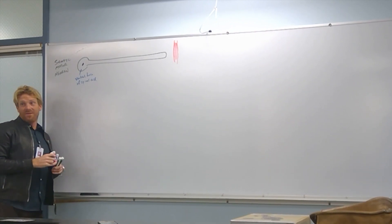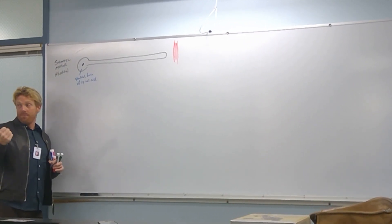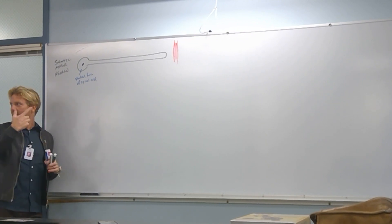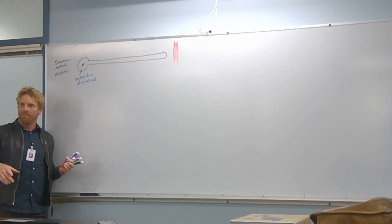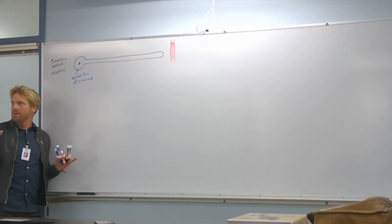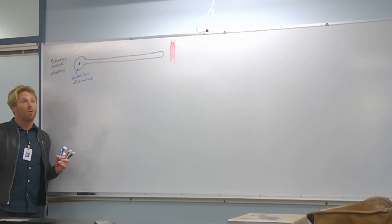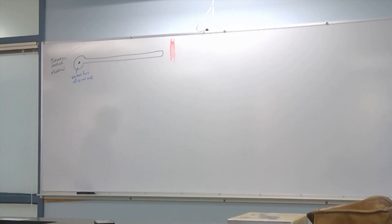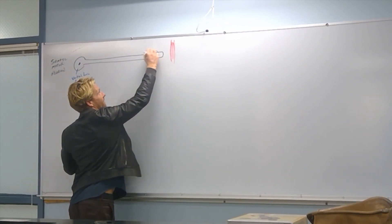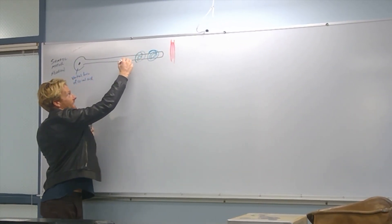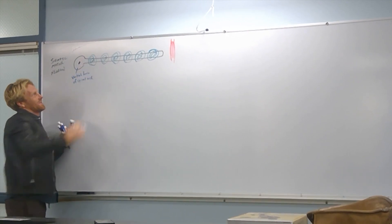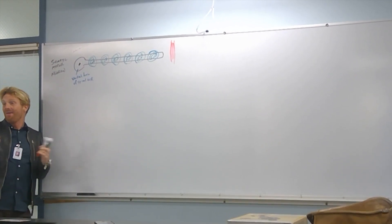Is this axon heavily myelinated, lightly myelinated, or not myelinated at all? Heavily myelinated — because this needs to be the fastest neuron we have. When we tell our muscles to contract, we want them to contract right away. The more myelin you have, the faster the signal travels. The heavily myelinated axon is represented by filled-in blue circles indicating many Schwann cells wrapped around it.